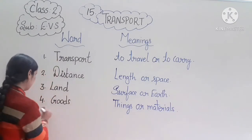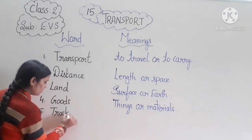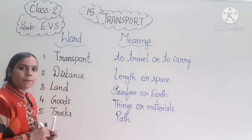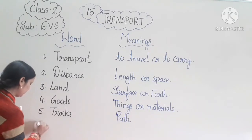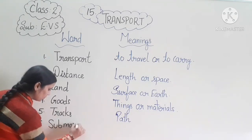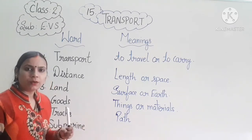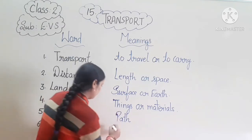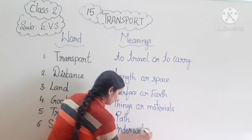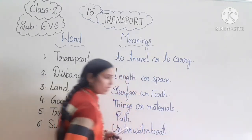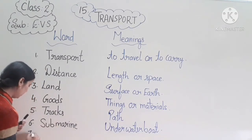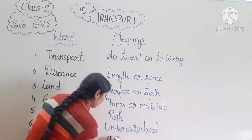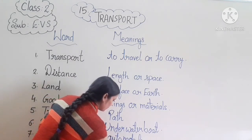Fifth one is tracks. Tracks means path. Sixth one is submarine. Submarine means underwater boat. Seventh word is vehicle. Vehicle means automobile.